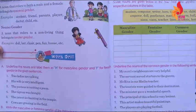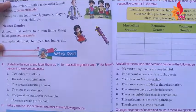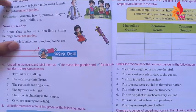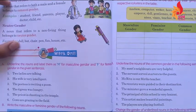Non-living things come in neuter gender. For example, doll. A doll on its own cannot do anything.